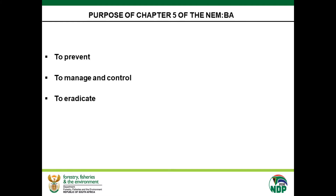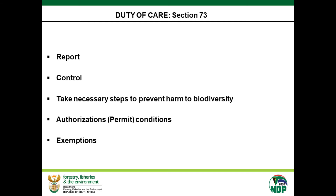Chapter 5 of the National Environmental Management Biodiversity Act is relevant here. Section 73 of the Act gives duties of care to land owners — they have to report if any alien species is occurring on their property. It's not just reporting; they also need to control and take necessary steps to prevent harm to biodiversity. Regarding authorizations, you basically need to have a permit to conduct any restricted activity involving category 2 listed invasive species.